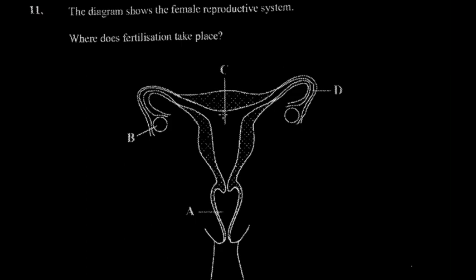Question 11 gives us a diagram of the female reproductive system, and you're asked to identify where fertilization takes place. This is a very common diagram. I always advise students to know what each part means — you should be able to identify all the parts in the reproductive system for both females and males.